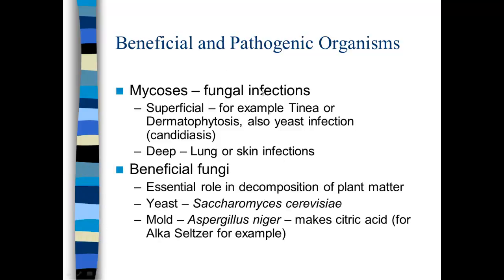Some beneficial fungus: yeasts are used for fermentation — that's how we get beer and wine, and that's how we make bread rise. The baker's yeast that you buy is Saccharomyces cerevisiae. Beneficial mold: Aspergillus niger actually makes citric acid. There are large reactors for this in a laboratory in Elkhart, Indiana, and this citric acid is part of Alka-Seltzer.